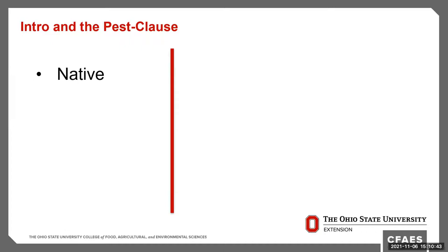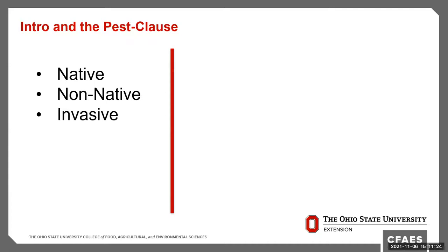The pest clause: it is truly important to define the word native. Usually people respond by saying something that's been there for a very long time. Oppositely, when we talk about non-native, people describe that as something that has been introduced, either on purpose or accidentally. And finally, the term invasive — if something is invasive, it has to cause some sort of harm. This could be environmentally, ecologically, or economically. It's important to remember that if something is termed invasive, it has to be non-native.